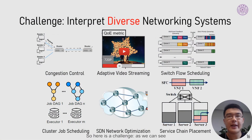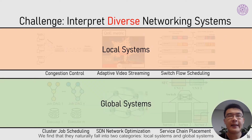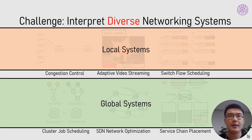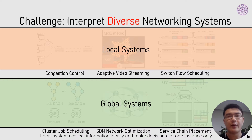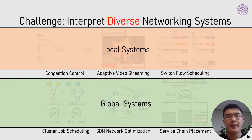Here is a challenge: there are many scenarios under the umbrella of networking systems. How can we interpret those diverse systems? We find that they naturally fall into two categories: local systems and global systems. Local systems collect information locally and make decisions for one instance only, such as congestion control. Global systems make global planning for multiple instances, such as the software-defined networking controller.